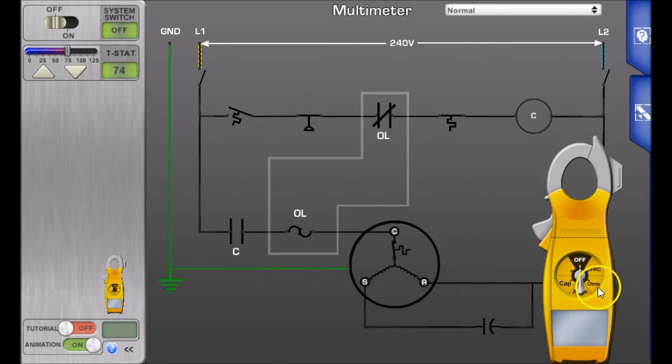So you grab your meter and you're going to switch it to ohms and we are going to measure between the common and the run winding and that gives us a resistance measurement of two ohms. Then you're going to measure between the common and the start winding. That gives you a resistance measurement of 10 ohms.